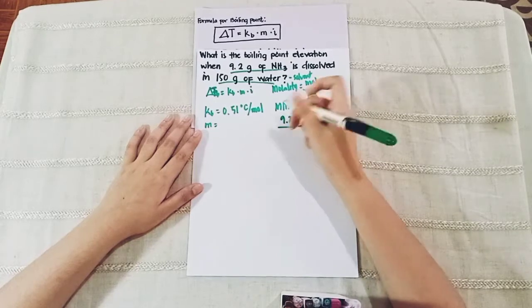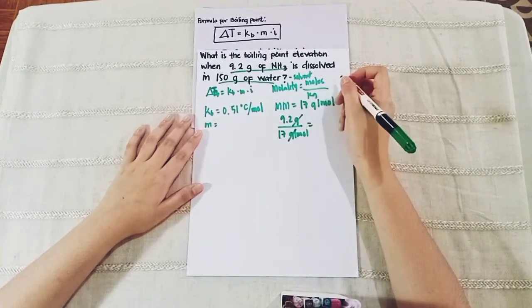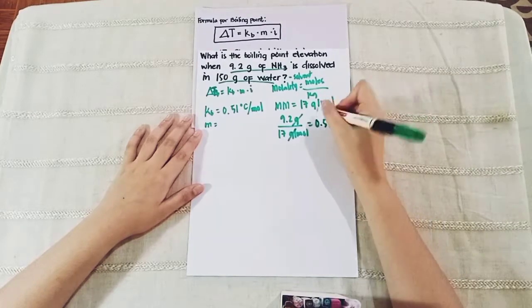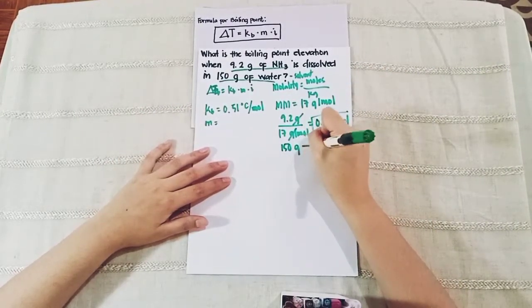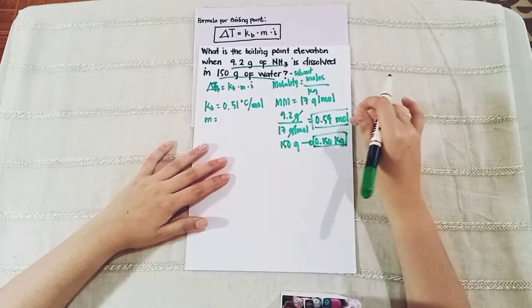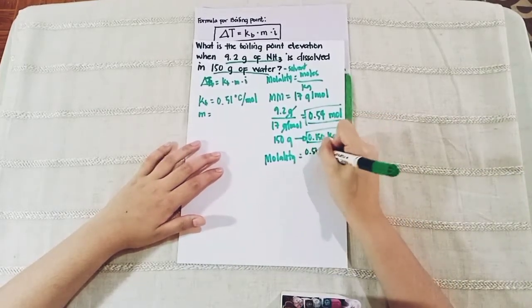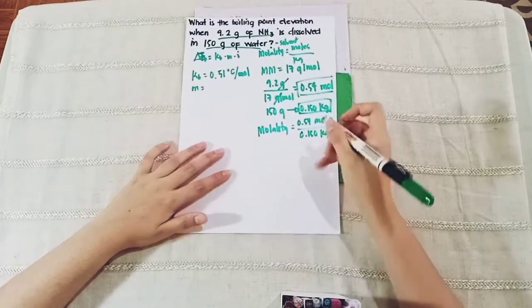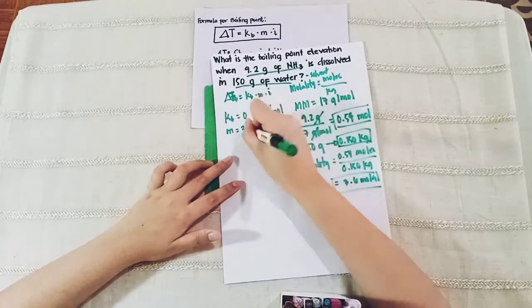We divide 9.2 grams by 17 grams per mole — canceling out the grams — and 9.2 divided by 17 equals 0.54 moles. Now let's solve for the molality. Molality equals 0.54 moles over 0.150 kilograms, which gives us 3.6 molal.